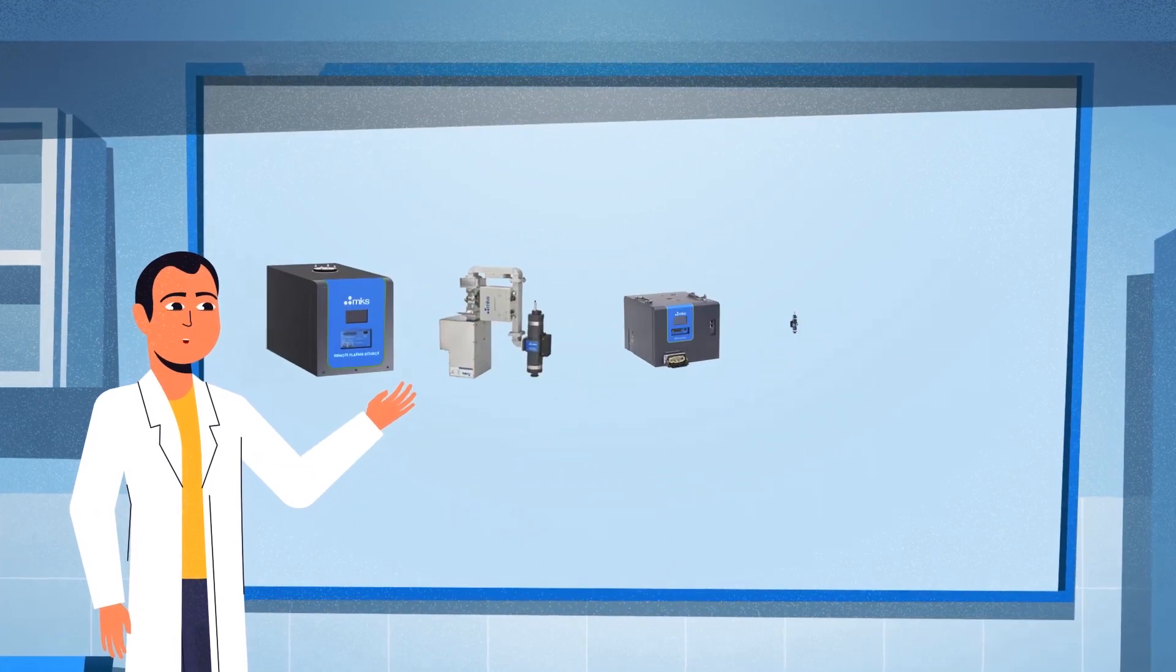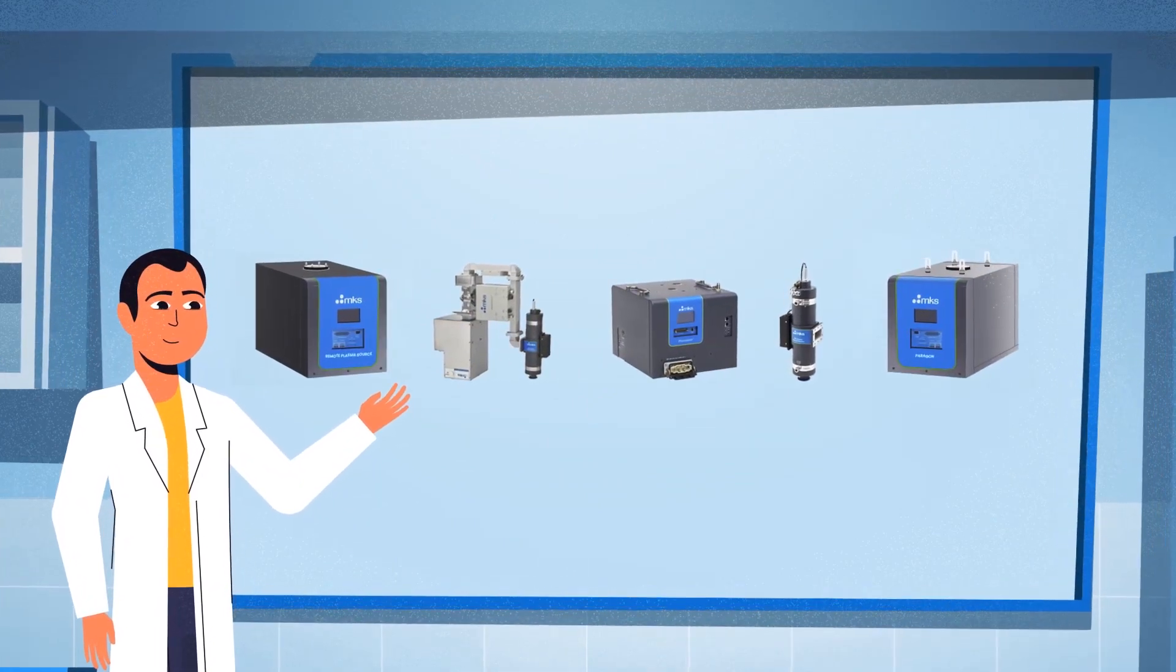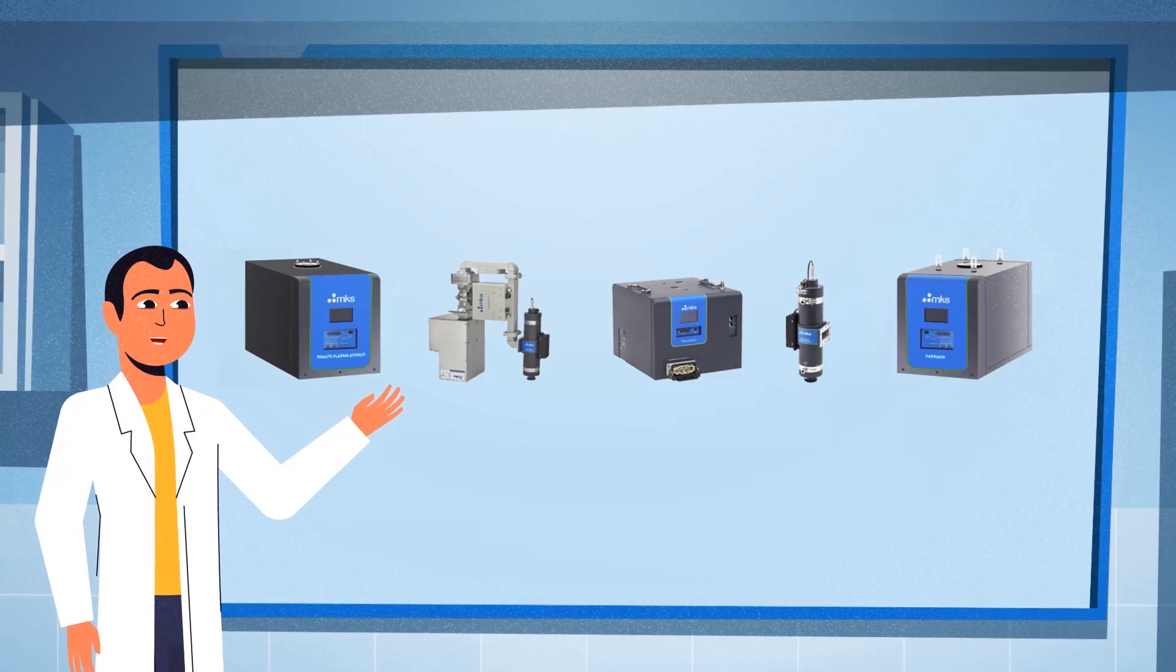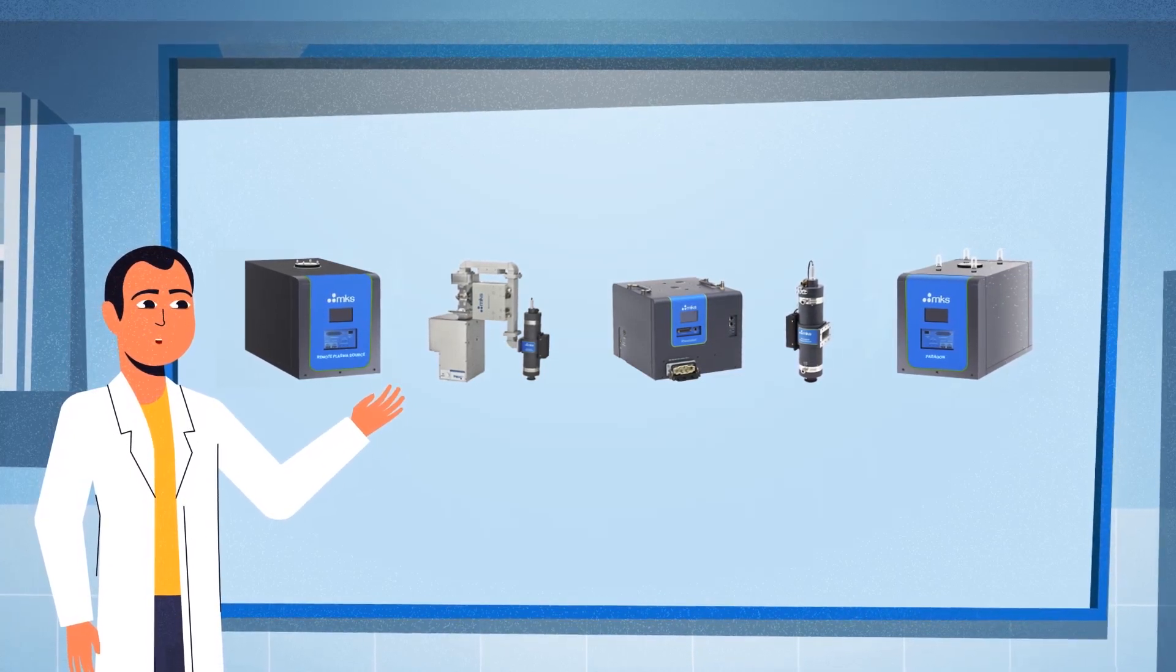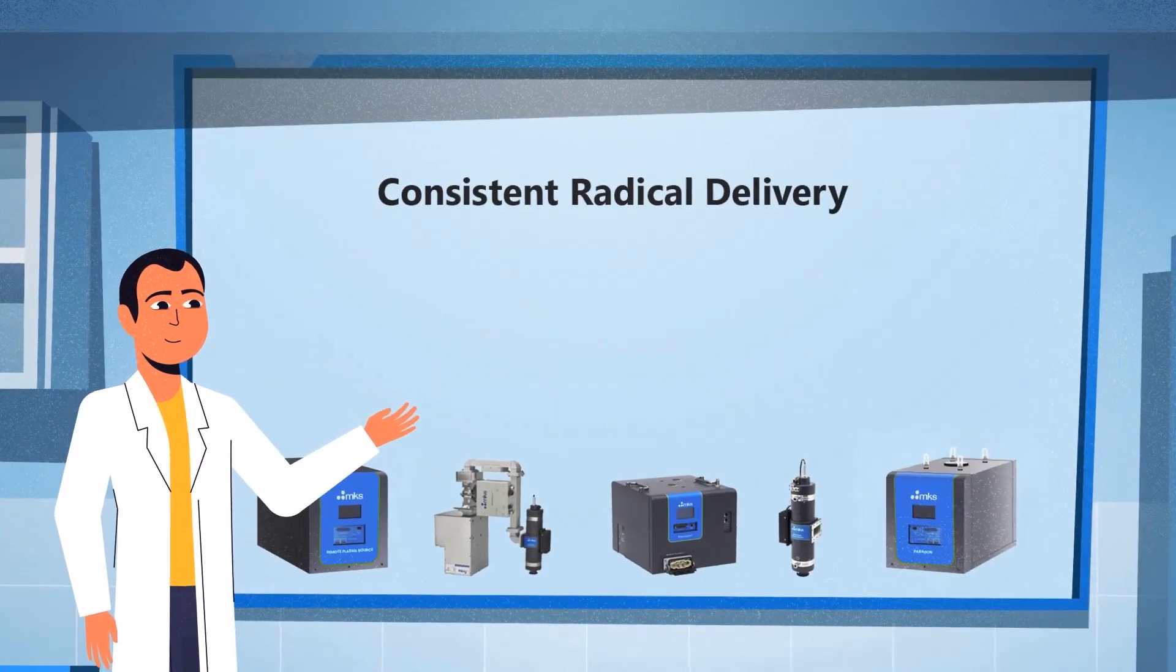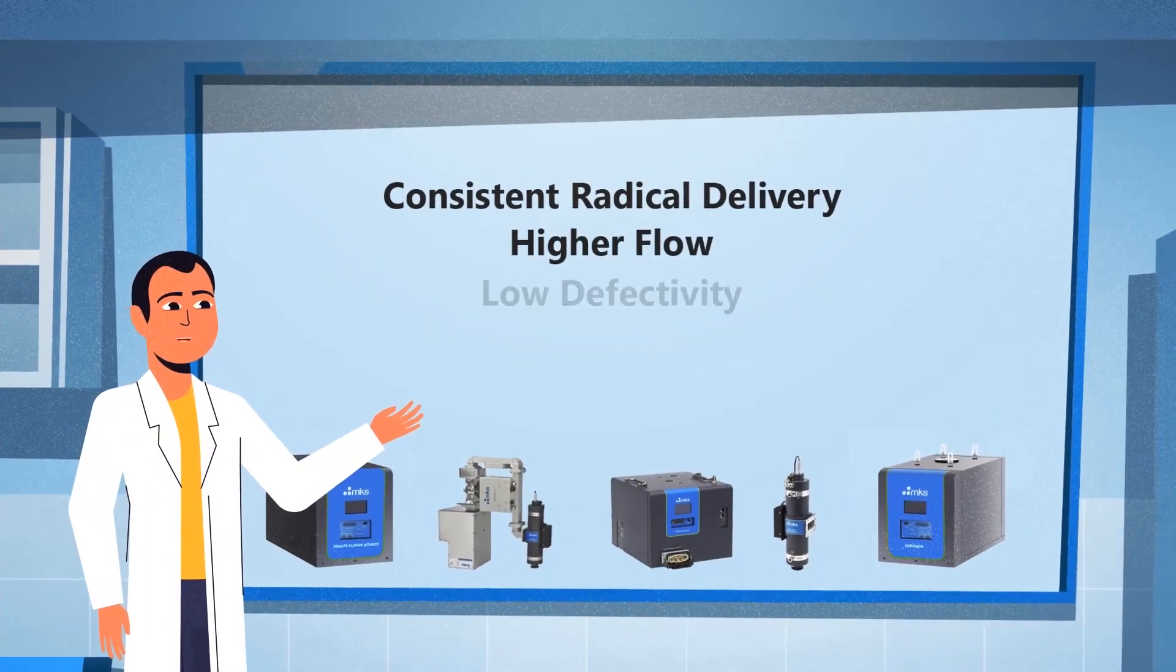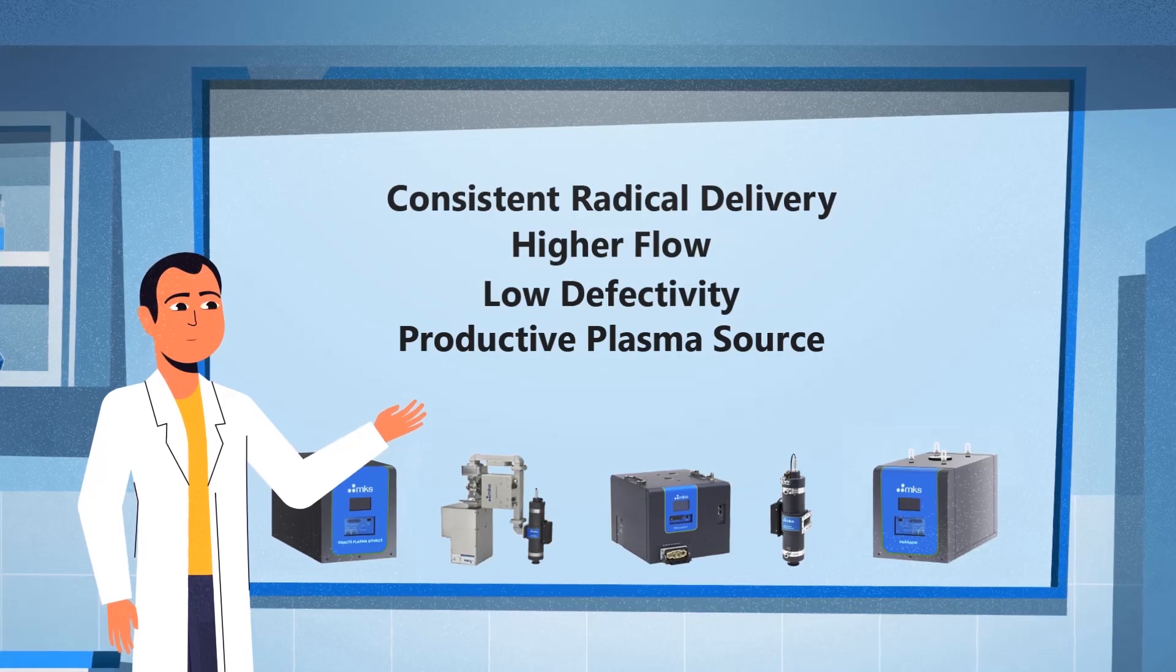Our plasma block material reduces radical recombination and provides high erosion resistance for longer block life. It uses lower metals for on-wafer processes, ensures consistent radical delivery, higher flow, low defectivity, and a productive plasma source.